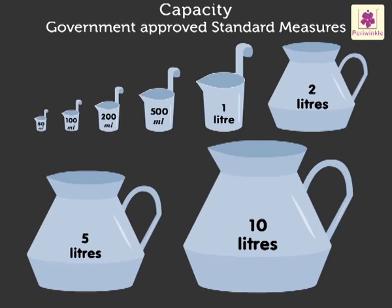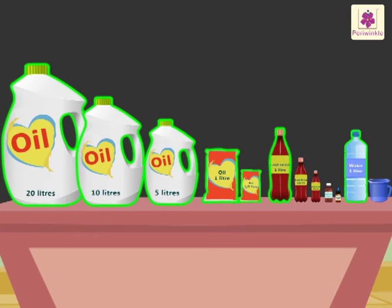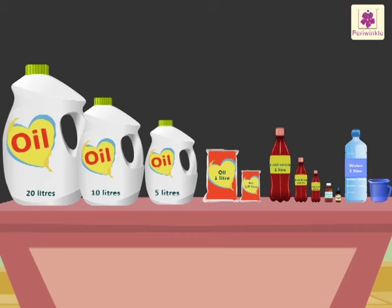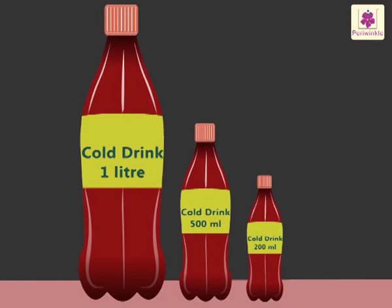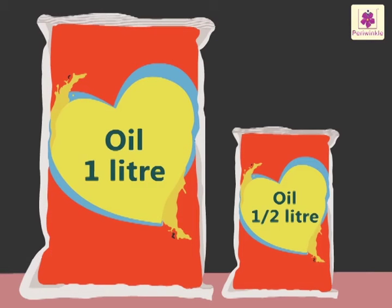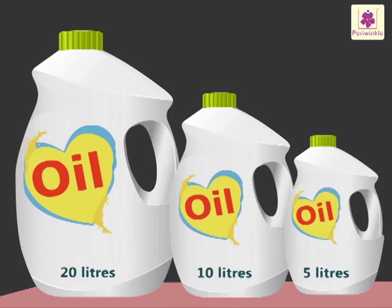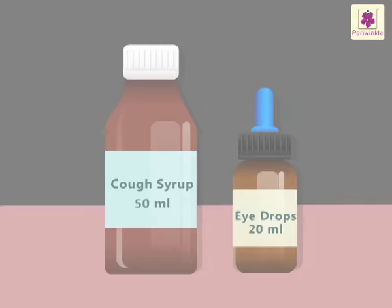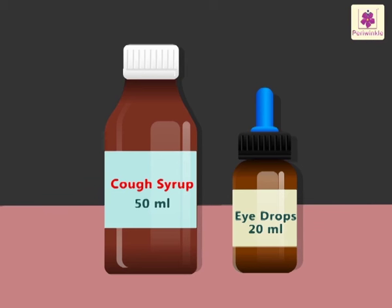Certain liquids in markets are sold in liters and milliliters. Let's have a look at a few such examples. One: cold drinks are sold in bottles that can hold two hundred milliliters, five hundred milliliters, and one liter. Two: we have seen cooking oil getting sold in pouches that can hold half a liter or one liter. The big cans can hold five, ten, or twenty liters of oil. Three: there are certain medicines like cough syrups and eye drops which are sold in small bottles that can hold liquid in milliliters.